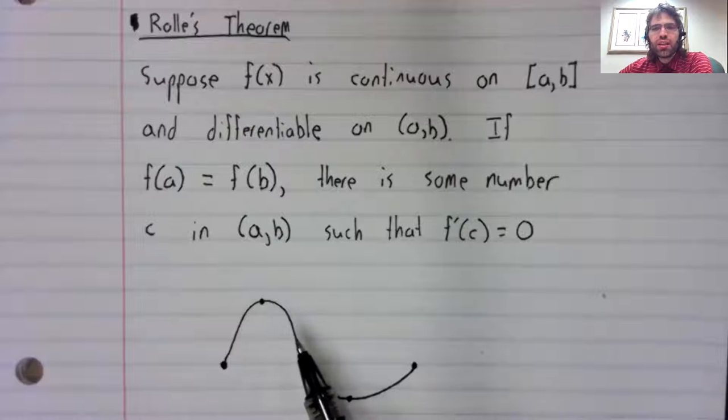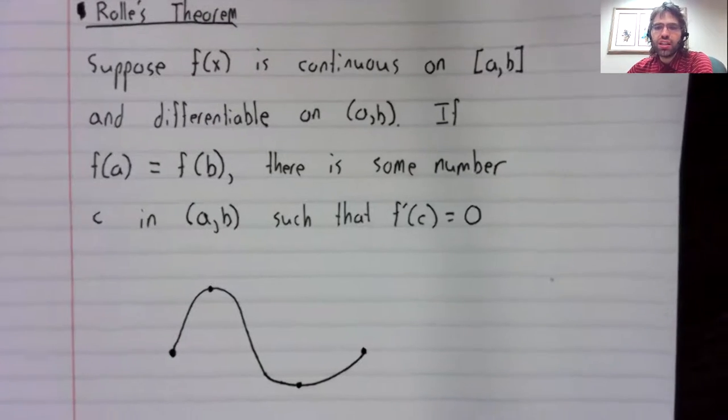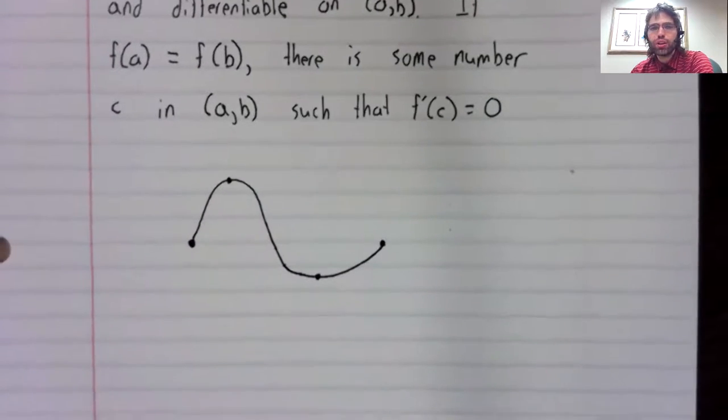So in this particular case, we have two values of c, where the derivative is zero.